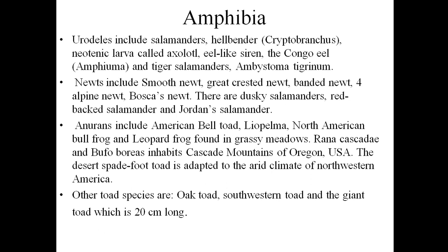If you take any biogeographical realm, amphibians mainly show the highest degree of endemism compared to any other organism in any of the biogeographical realms. In this Nearctic region there are many salamanders, then hellbenders, and neotenic larvae — called axolotl larvae — where the larvae never metamorphose into an adult but instead the larvae itself matures and starts reproduction. There are even eel-like sirenians, the Congo eel, and the tiger salamander, Ambystoma tigrinum. These are the urodeles — the tailed amphibians.